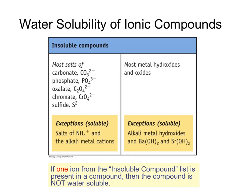Next we have our list of insoluble compounds. We see here that most of the salts of carbonate, phosphate, oxalate, chromate, and sulfide are not soluble. This means that something like calcium carbonate is not soluble in water — it will remain in its solid form. There are some notable exceptions here as well. If these salts have NH4+ or any of the alkali metals (the group 1 metals), they are soluble in water. So sodium carbonate will be soluble in water since it is one of the exceptions.